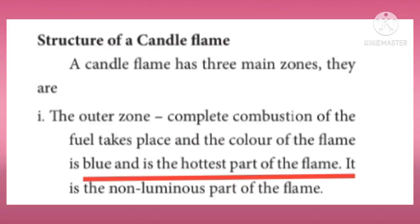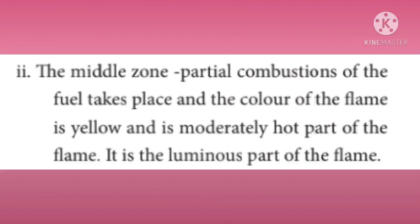Structure of a candle flame: a candle flame has three main zones. The outer zone is where complete combustion of fuel takes place. The color of the flame is blue and it is the hottest part of the flame — it is the non-luminous part of the flame. The middle zone is where partial combustion of fuel takes place.